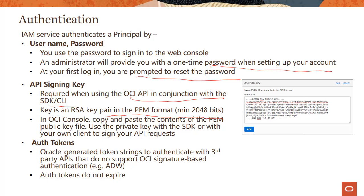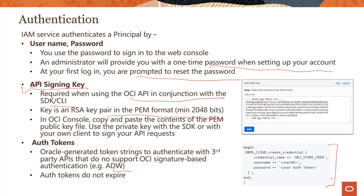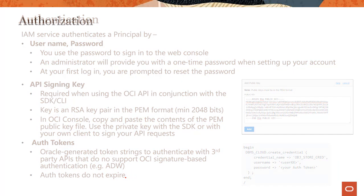The third authentication mechanism is specific to Oracle Cloud Infrastructure: authentication tokens. These are Oracle-generated token strings to authenticate with third-party APIs that do not support the OCI signature-based authentication. A good example is Oracle's own Autonomous offering — if you are using Autonomous Data Warehouse and want to pull data from object storage, you would use a username and, instead of a password, provide your authentication token. One important thing to note is that authentication tokens do not expire.